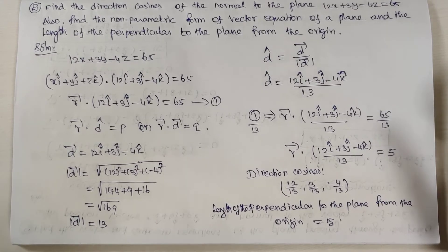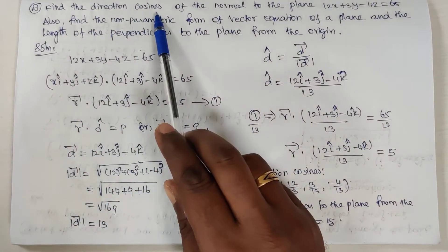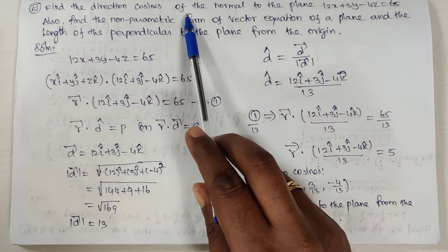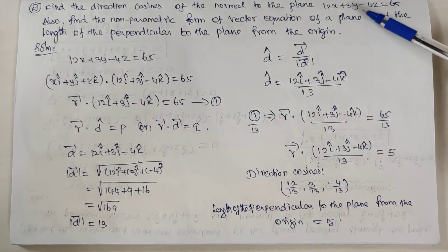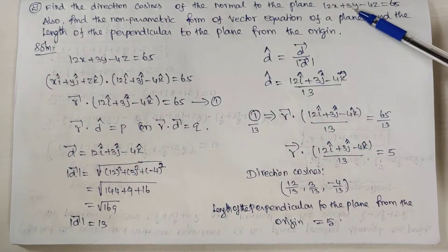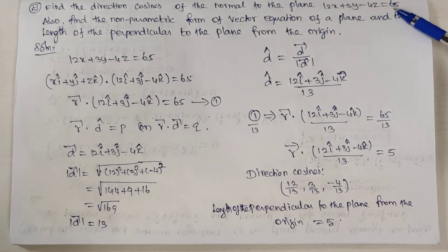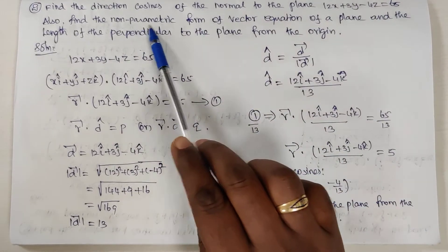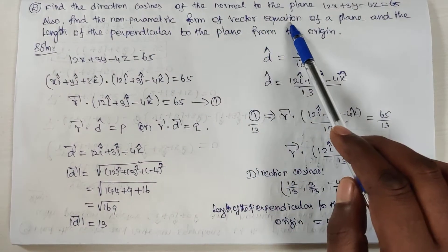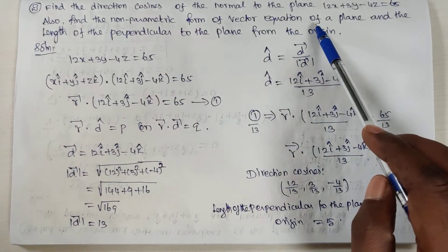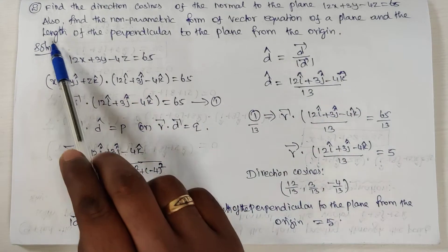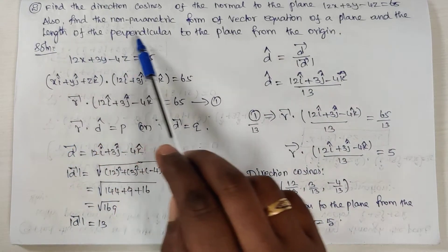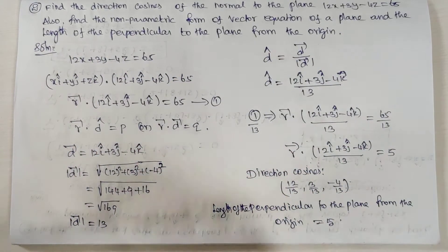Now we are going to see equation number 2. Find the direction cosines of normal to the plane 12x plus 3y minus 14z is equal to 65, and also find the non-parametric form of vector equation of the plane and the length of perpendicular to the plane from the origin.